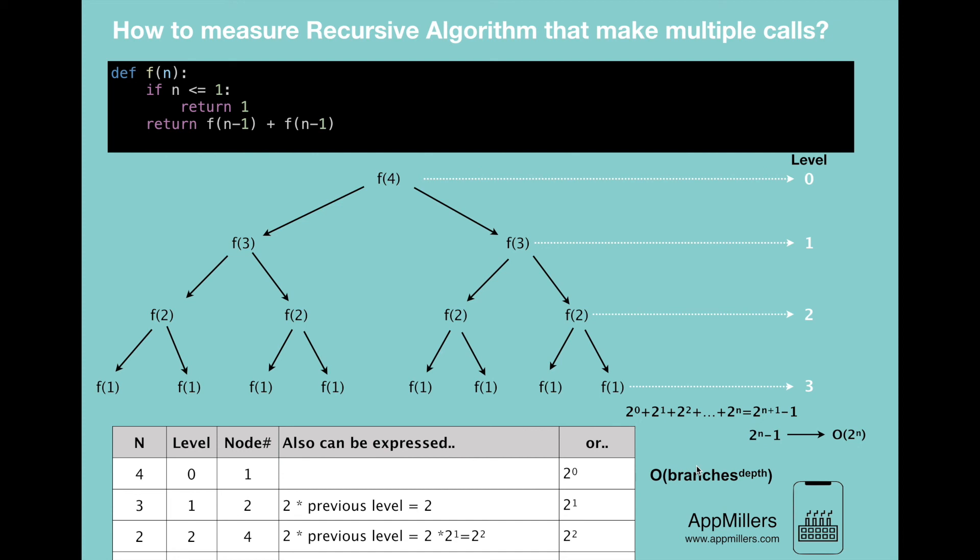So in our case, the function calls itself twice, so our branch equals 2. We have identified that the depth equals the parameter of the function, which is n. This means that for parameter n, the time complexity is O(2^n).